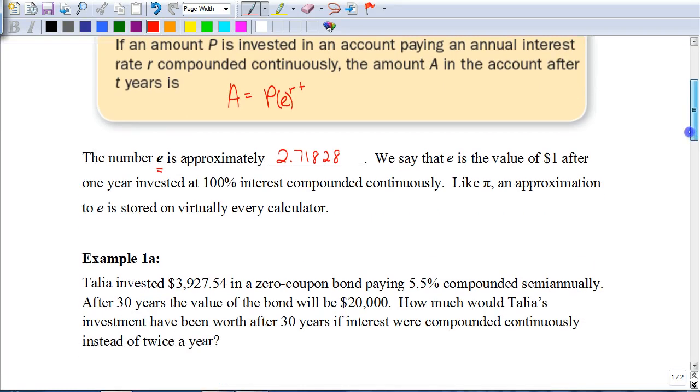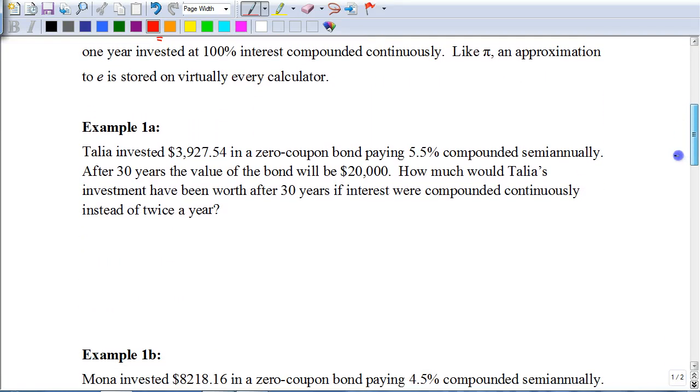So let's look at a situation we'll be using that. It says, Talia invested $3,927.54 in a zero-coupon bond, paying 5.5% compounded semi-annually. After 30 years, the value of the bond will be $20,000. How much would Talia's investment have been worth after 30 years if interest were compounded continuously instead of twice a year?